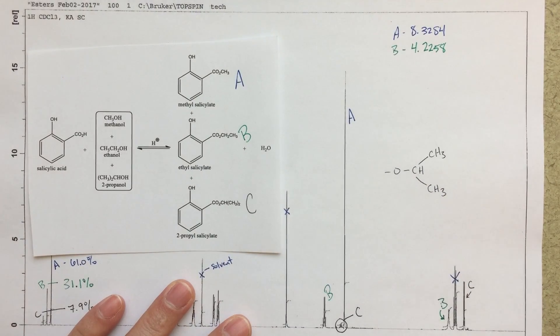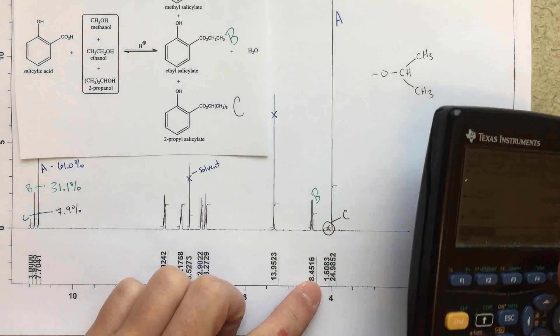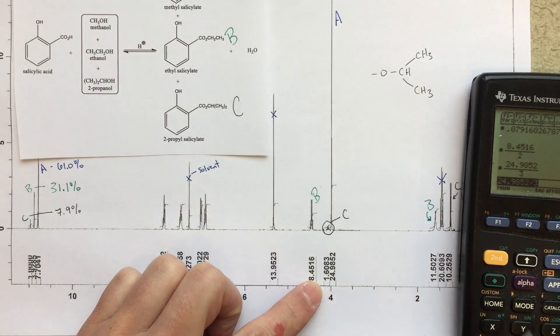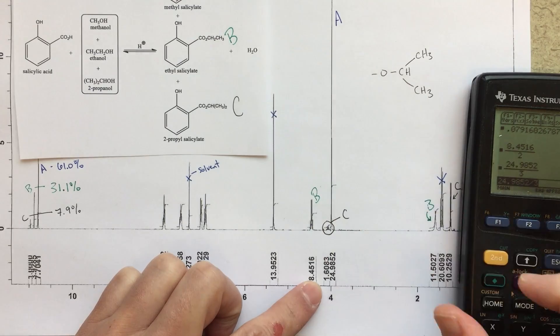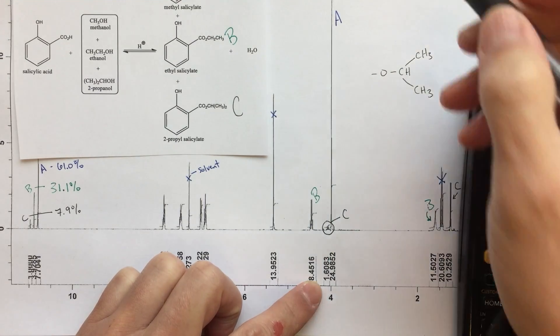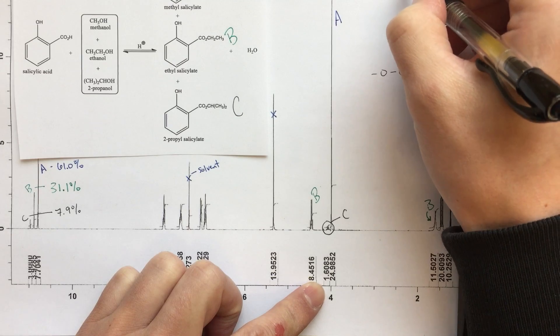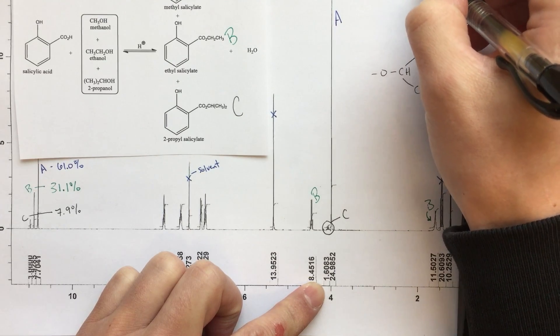And then for C, C is already sort of standardized, right? Because C is only for 1 proton, this 1 proton here. So we can just use that number of 1.6083.